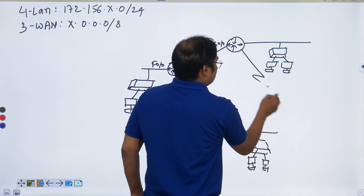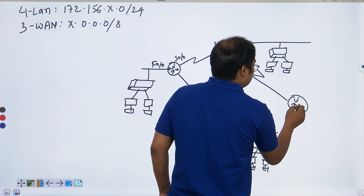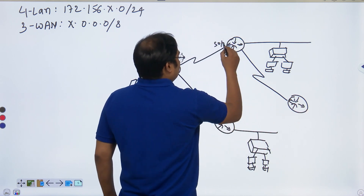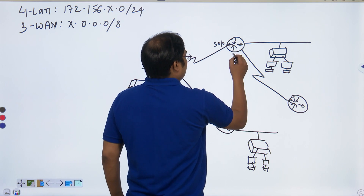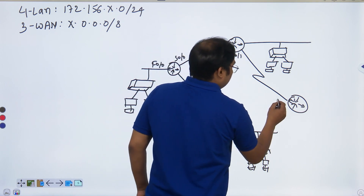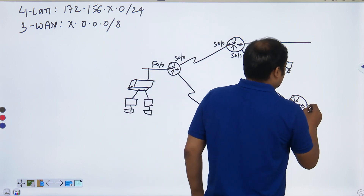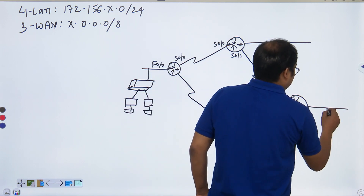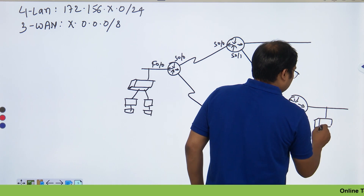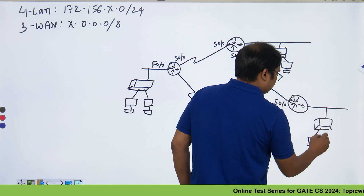This router is also connected with another router via another WAN link. The interfaces used are S0/1 and S0/0 — these are serial link interfaces. The switch here has systems connected to it.